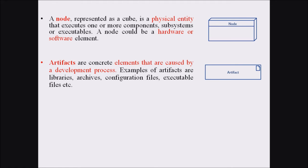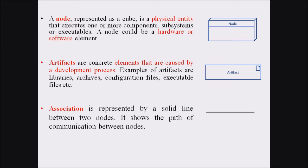The second symbol is the artifact. Artifacts are concrete elements caused by the development process, and they include libraries, archives, configuration files, executable files, databases, and so on. The third symbol is association, which is represented with the help of a solid line between two nodes and shows the path of communication between the nodes.